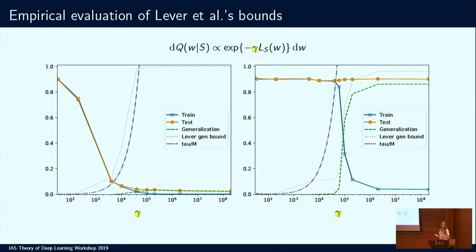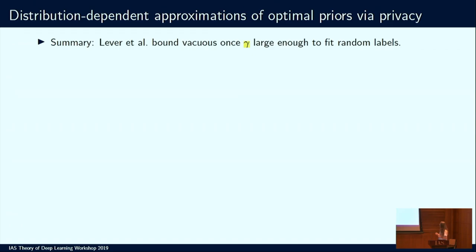If you do the same analysis on MNIST with randomized labels, when there is no signal in the data, the test error stays around guessing rate. The training error, initially at guessing rate for small inverse temperature, starts overfitting as gamma increases until you train to nearly zero classification error. The Leverett-Toll bound closely follows the actual generalization error — which tells us these bounds on the KL divergence, without using the data distribution itself, capture really the worst-case scenario. They can become vacuous precisely in the regimes where we do not want them to be vacuous. So Leverett-Toll bounds are vacuous once gamma is large enough to fit random labels.